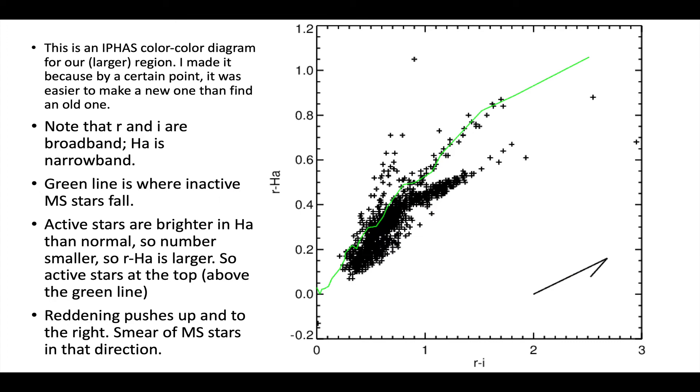This is an IPHAS color-color diagram. I was trying to find a good clear one to use for this talk, but I couldn't find one easily. So I just gave up and made one. This is for our region IC 417. We've got the y-axis is R minus H alpha. The x-axis is R minus I. Note that R and I are broadband, but H alpha is narrow band. So I'm using a color-color diagram with one narrow band filter. Reddening is going to push you up into the right.